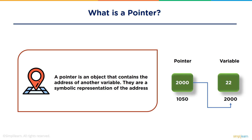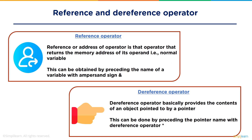The reference operator, also known as the address-of operator, is used to get the address of a variable. It can be easily obtained by preceding the name of the variable with an ampersand sign.